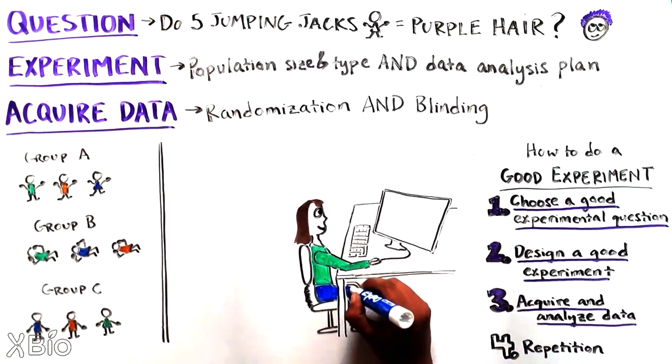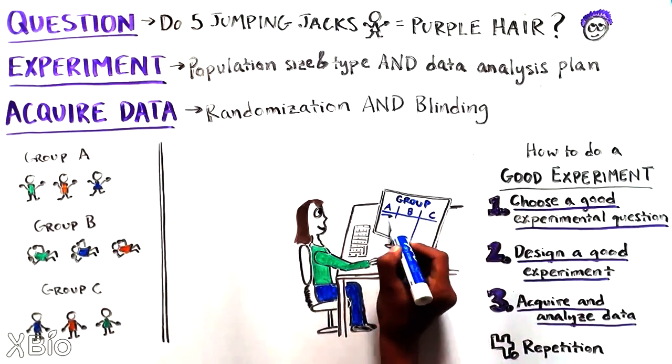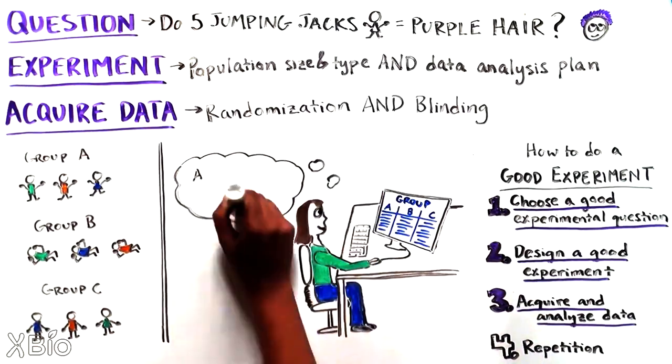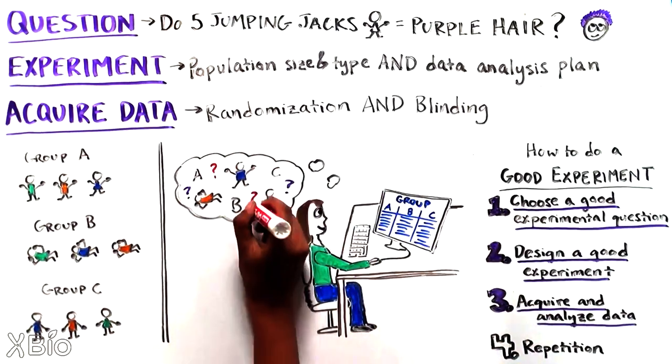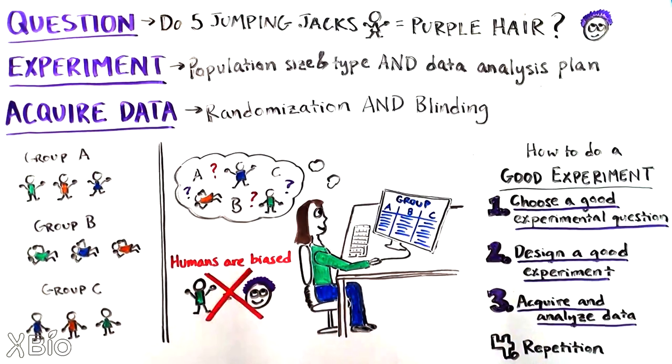Humans are very susceptible to bias, conscious or unconscious. So if the experimenters know which group is doing which exercise, they might assess the final hair color of the people in the jumping jacks group as more purple, even if it is not.